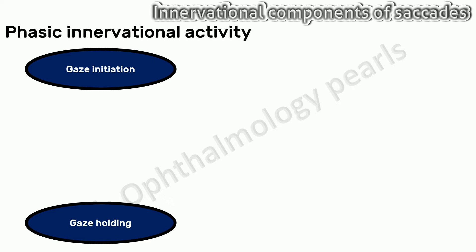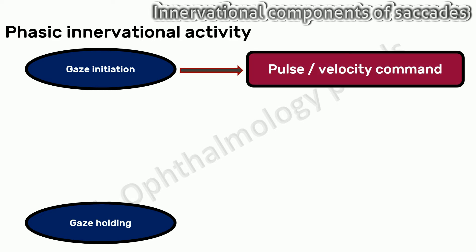Phasic innervational activity initiates the saccade, enabling the eye to overcome the inertia of the globe, and is called gaze initiation. The command for gaze initiation is referred to as the pulse or velocity command, as it is this command that determines the velocity of the saccade.